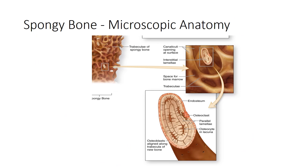Spongy bone has a simpler microscopic anatomy compared to compact bone. It has parallel lamellae, within which we find different cells — osteoclasts or osteocytes — still housed in lacunae. The lacunae also have canaliculi, which are those spider-like extensions connecting one osteocyte or lacuna to the next. These parallel lamellae are found within the trabeculae of the spongy bone, which has a much more porous appearance compared to compact bone.